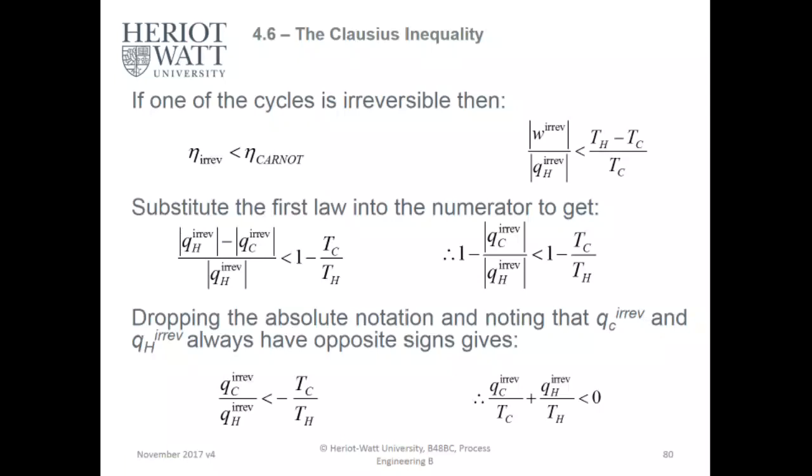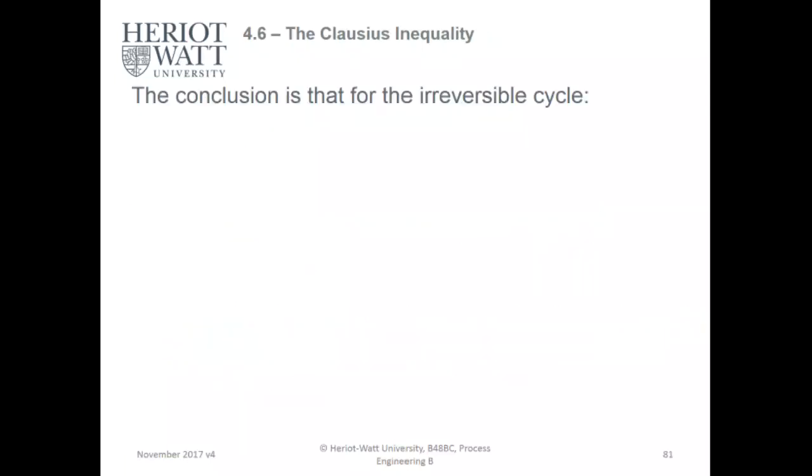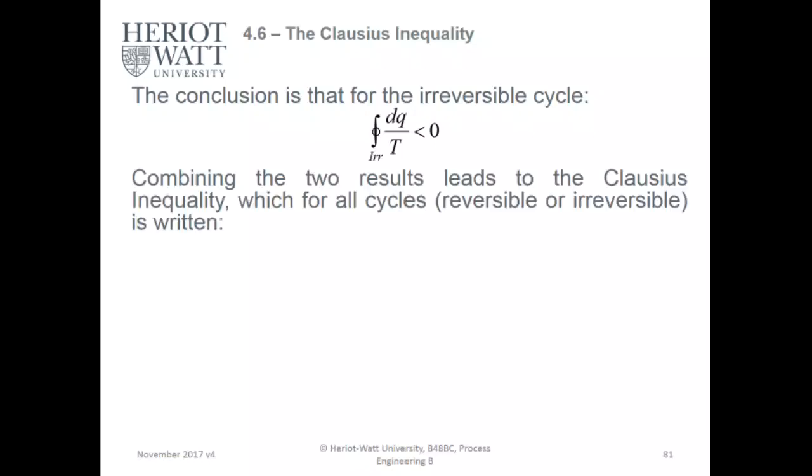The whole point of the Clausius Inequality is to emphasize that ideality and non-ideality, reversible and irreversible systems, are always going to be different. QC irreversible over TC plus QH irreversible over TH is always going to be lower than zero, always negative. The conclusion is that for irreversible cycles, DQ over T is always lower than zero. Combining the two results leads to the Clausius Inequality: for all cycles, reversible or irreversible, DQ over T is either lower than or equal to zero.